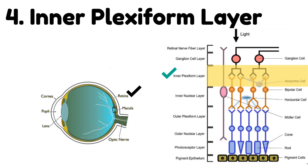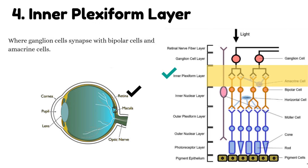Number 4: Inner plexiform layer. This is the layer where ganglion cells synapse with bipolar cells and amacrine cells.